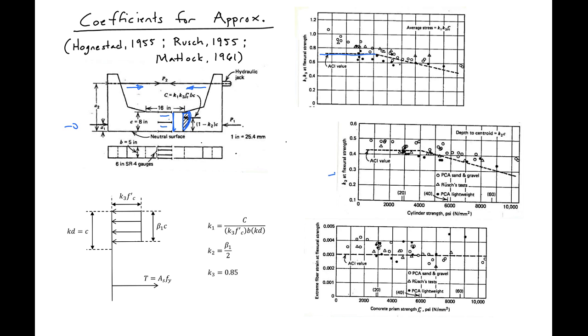And then finally, they measured different values for the ultimate strains and came up with the ultimate strain value that we use for ACI of .003. So you can see that they proposed a stress block